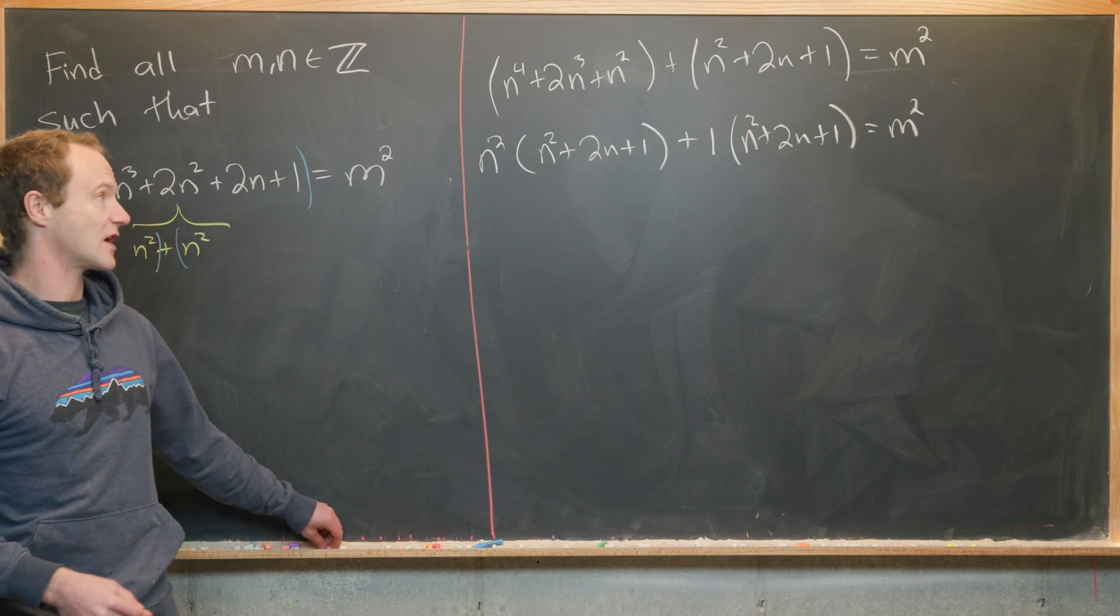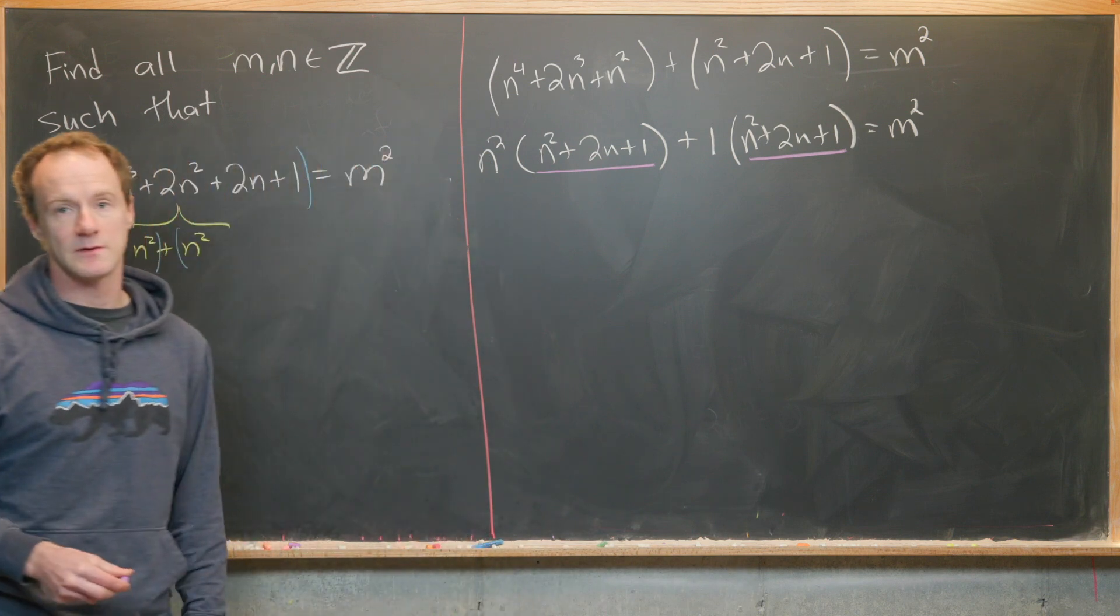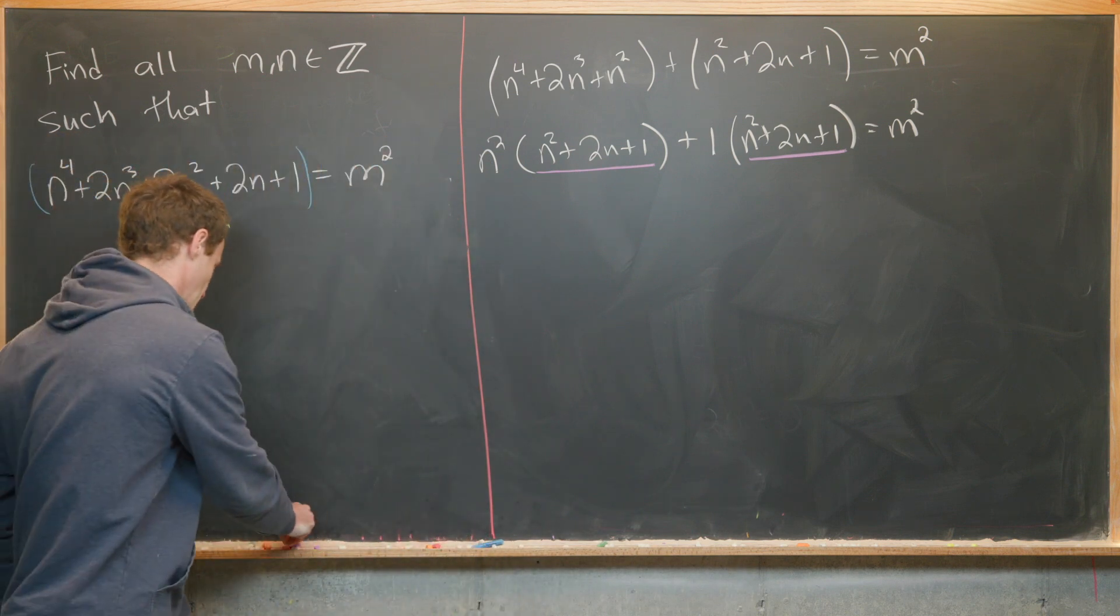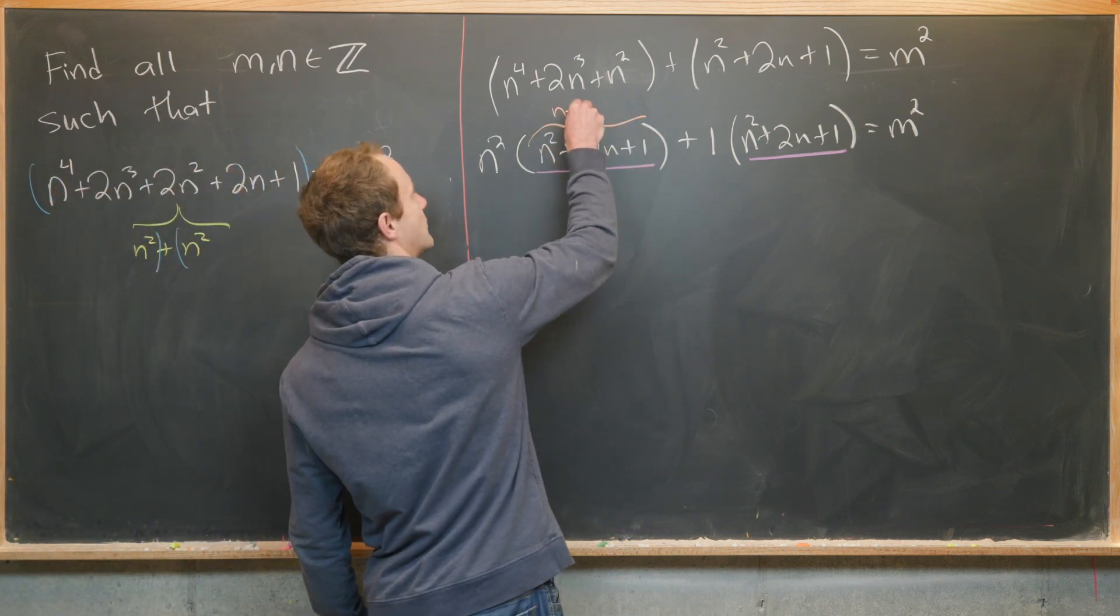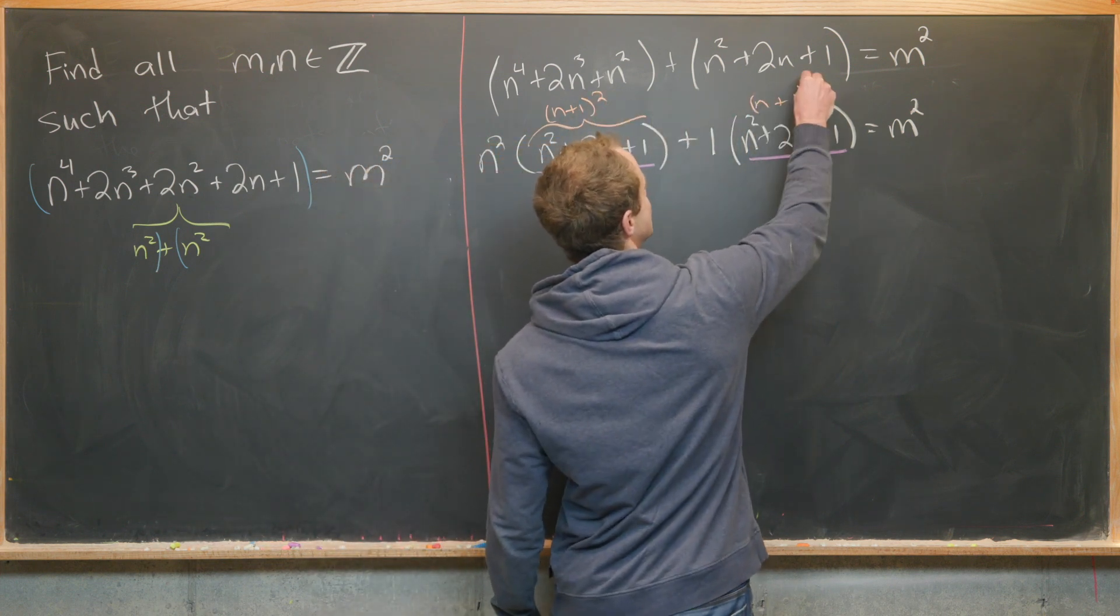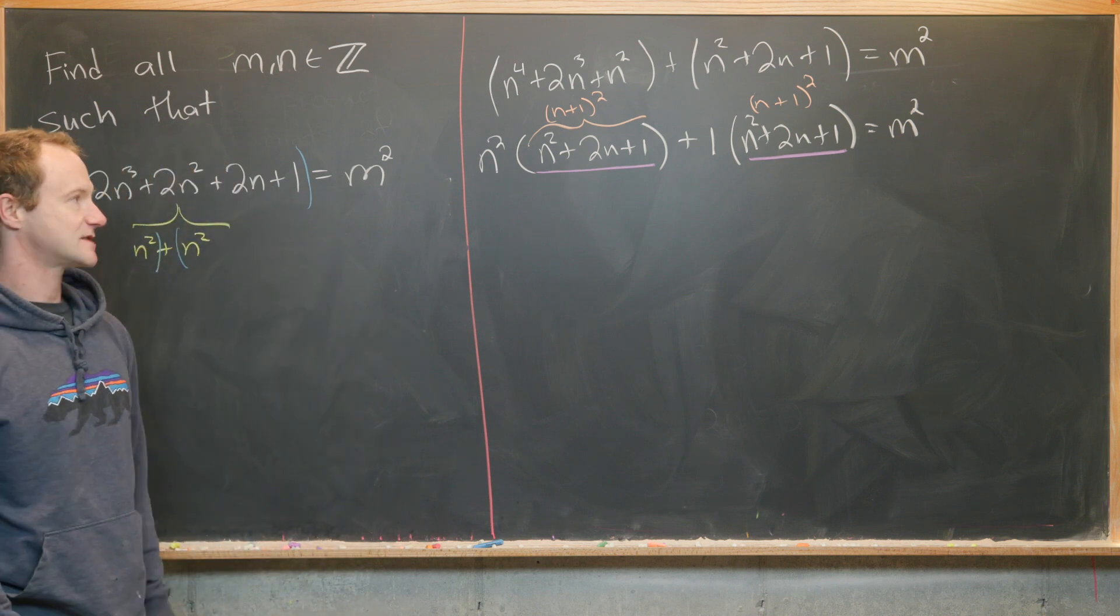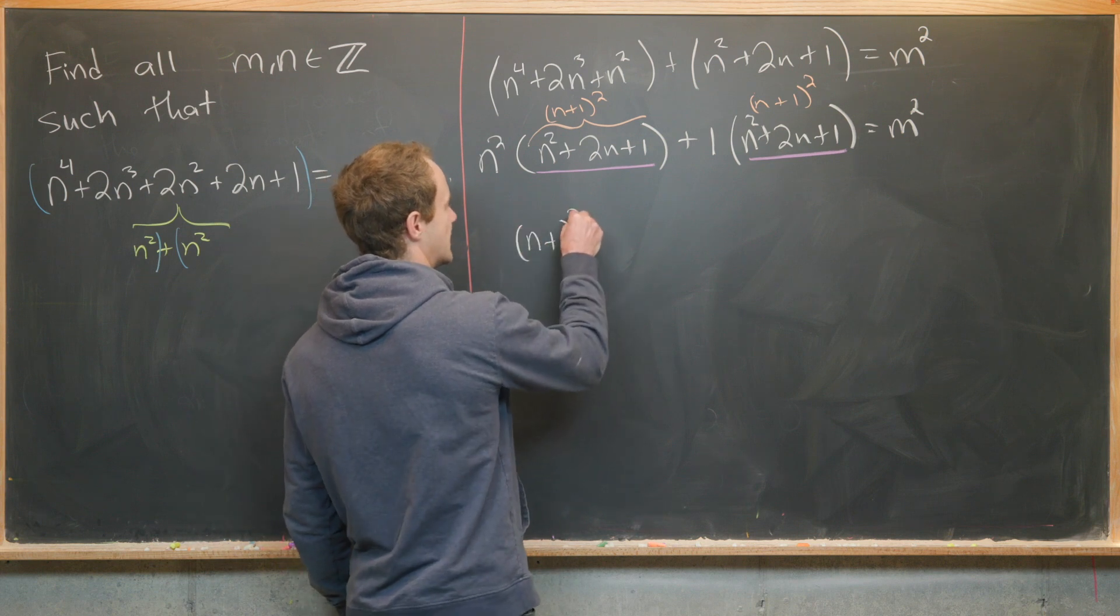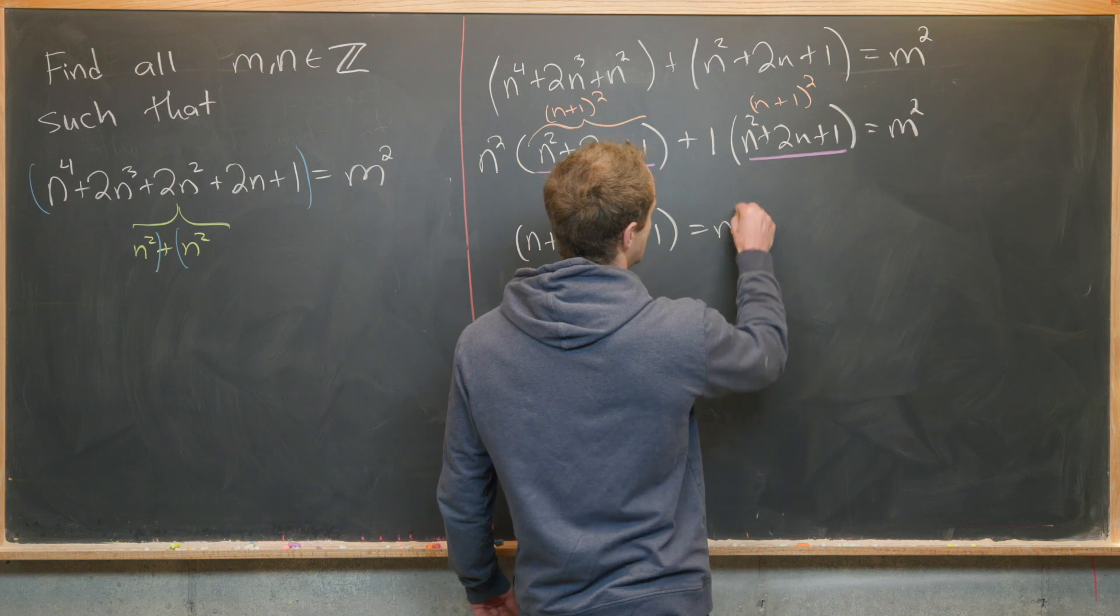But check it out. I've got a greatest common factor of n squared plus 2n plus 1 for both terms on the left hand side. This is a well-known perfect square binomial: n plus 1 quantity squared. So we can replace each of these with n plus 1 quantity squared. That allows us to factor the entire left hand side as n plus 1 quantity squared times n squared plus 1 equals m squared.